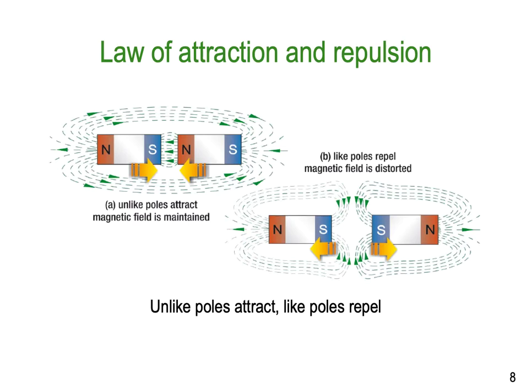The law of attraction and repulsion — most of us have played with magnets as kids. There are two basic laws of magnetism: unlike poles attract each other — a north and a south will pull together strongly to create one large complete magnetic field. Like poles repel — try to push two south poles together or two north poles together and you'll find it very, very difficult.